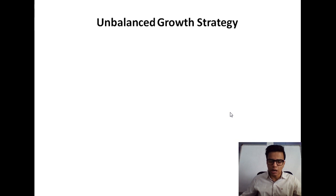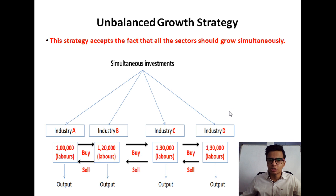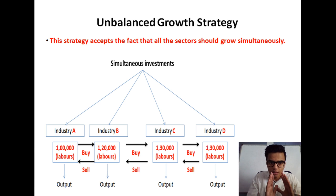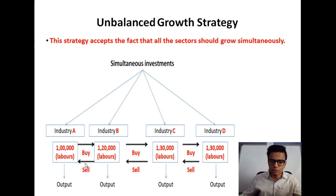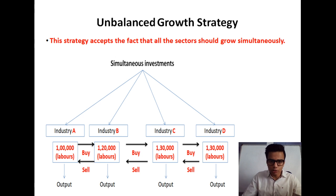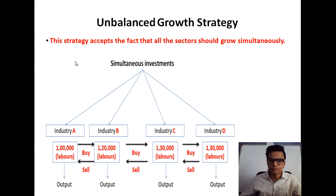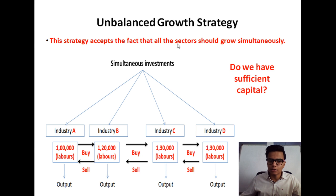Now let us jump into unbalanced growth strategy. The proponents of this strategy do not deny the fact that all sectors of the economy are interrelated. They agree with the concept that if you invest simultaneously in all industries, all of them will grow and exchange with each other. But they ask a question: do we have sufficient capital? Does the government have enough capital to invest in all these industries simultaneously?